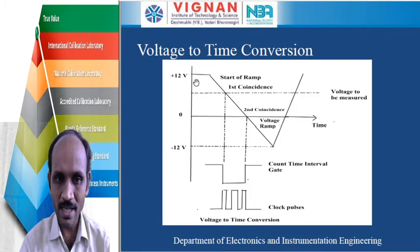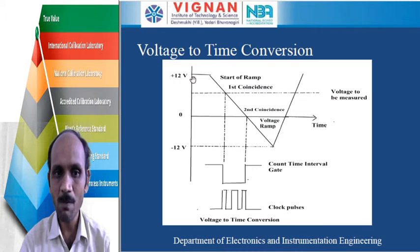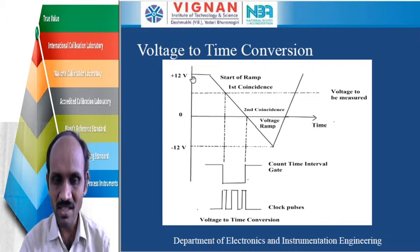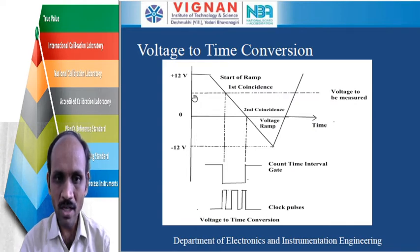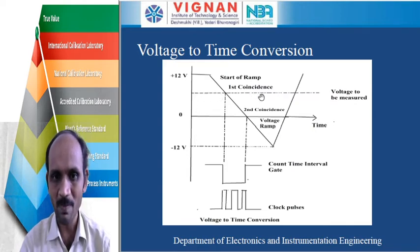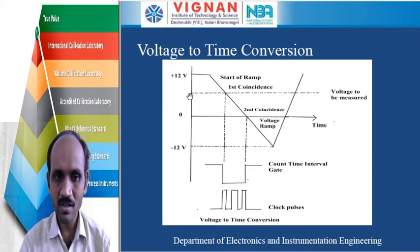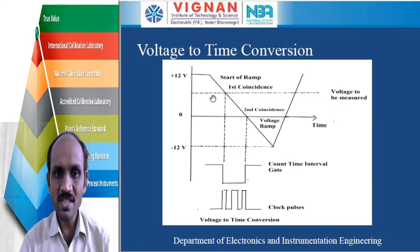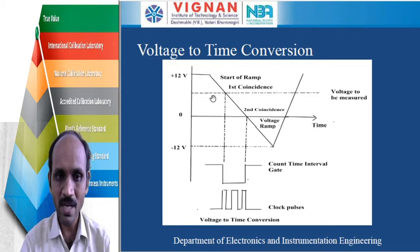In this diagram we are measuring a voltage within the range of plus 12 volts to minus 12 volts. The dotted line indicates the voltage to be measured. For example, if we take this value as 10 volts, this 10 volts is given to the ramp type DVM, and we will study how this 10 volts is displayed on the readout of the ramp type DVM.